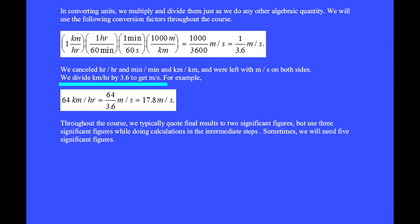This means that we divide kilometers per hour by 3.6 to convert to meters per second. For example, 64 kilometers per hour is 64 over 3.6 makes 17.8 meters per second.